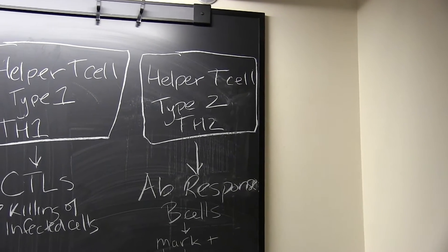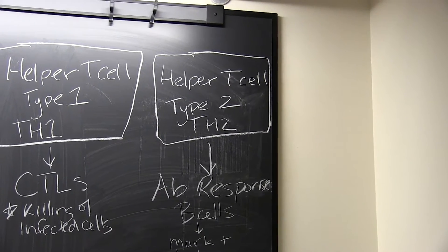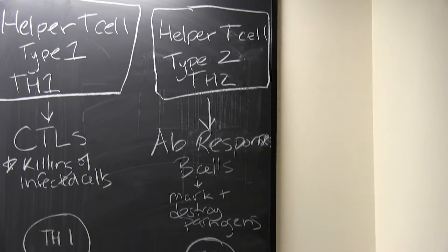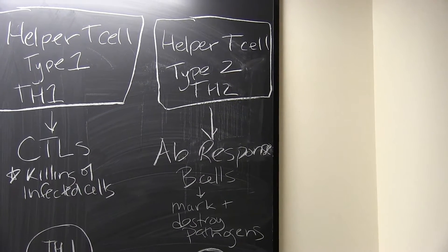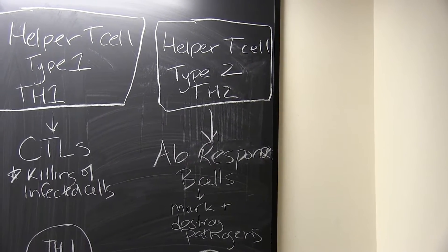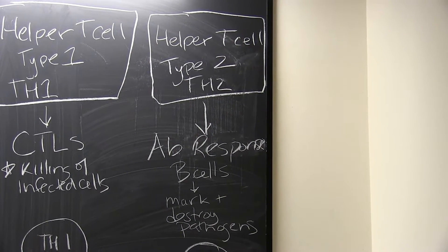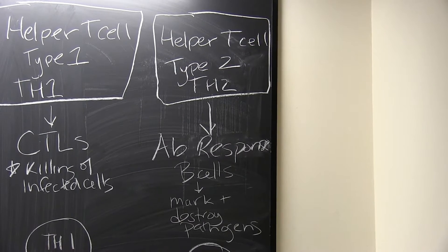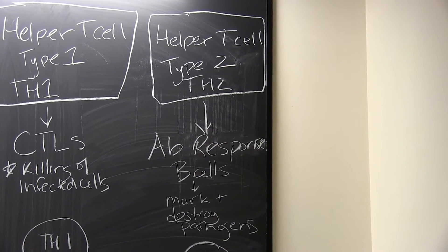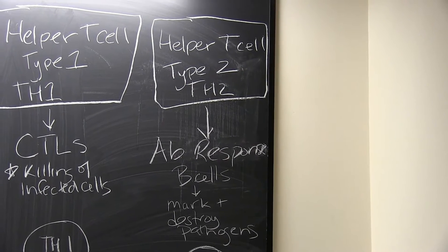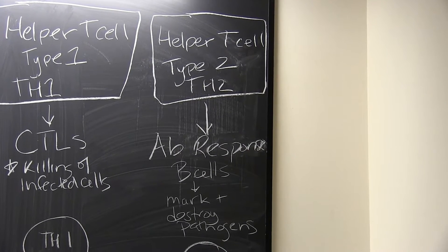Helper T-cells type 2 elicit a very different kind of immune response. They're in charge of initiating and activating B-cells and getting them to differentiate or specialize into plasma cells, which are antibody factories, or memory B-cells, which will be rapidly activated if you see that same infection, that same pathogen, a second, third, fourth time, etc.